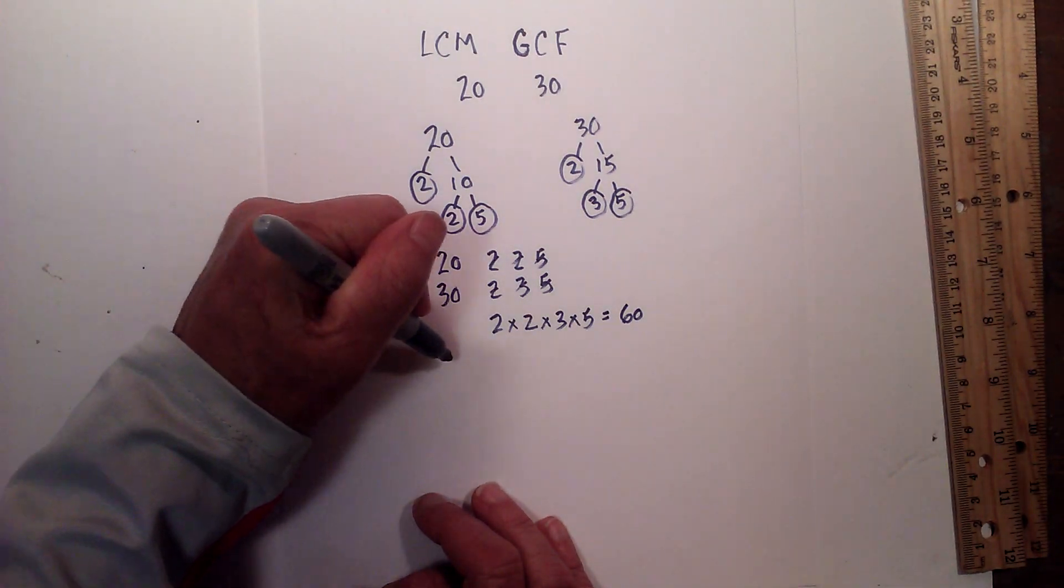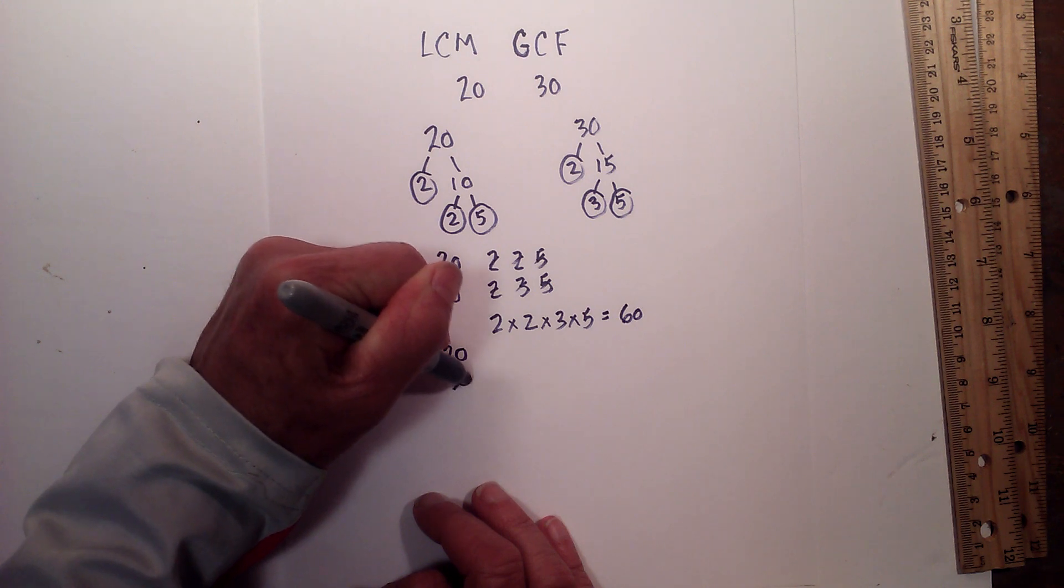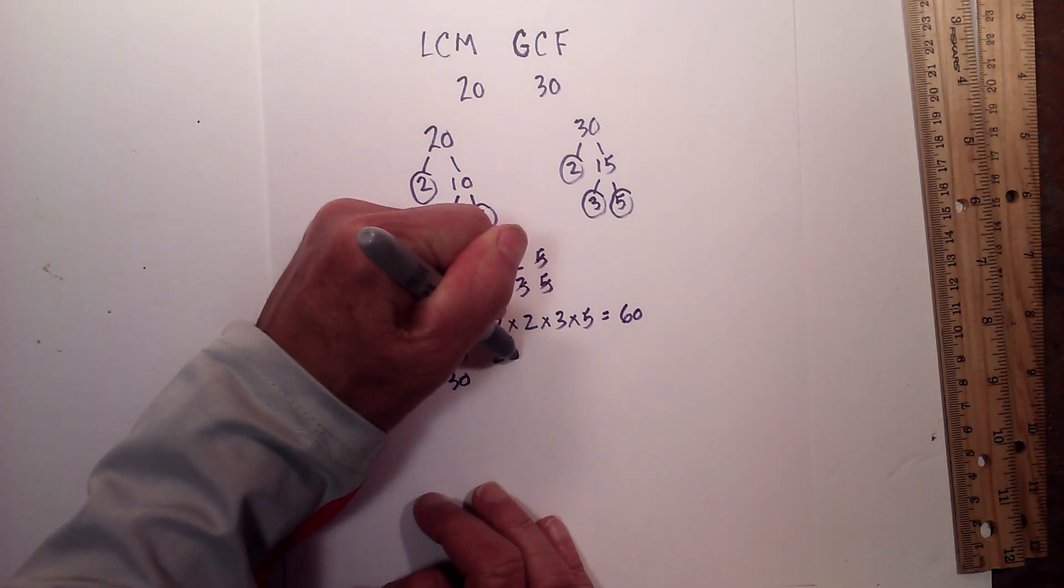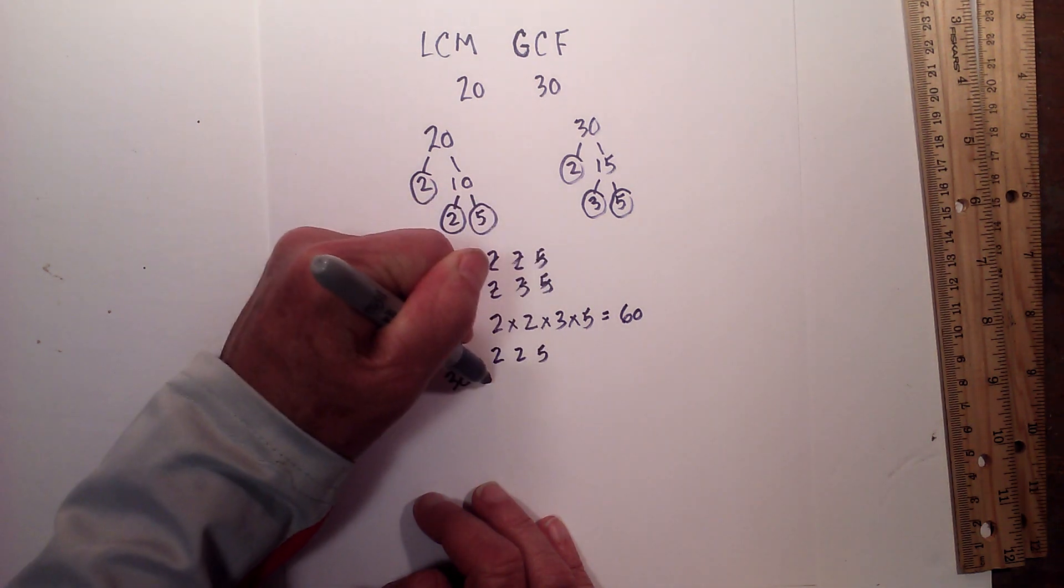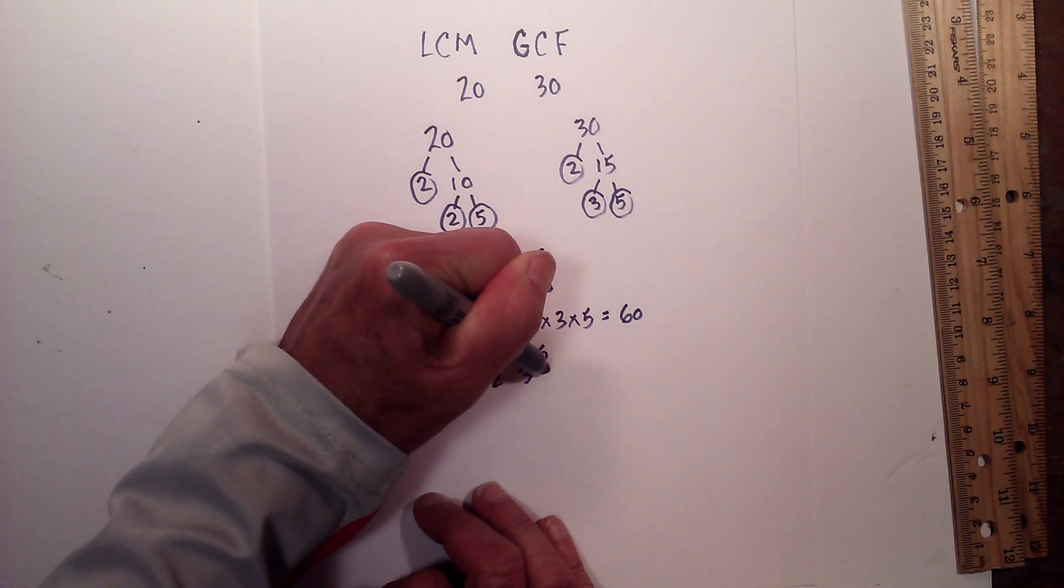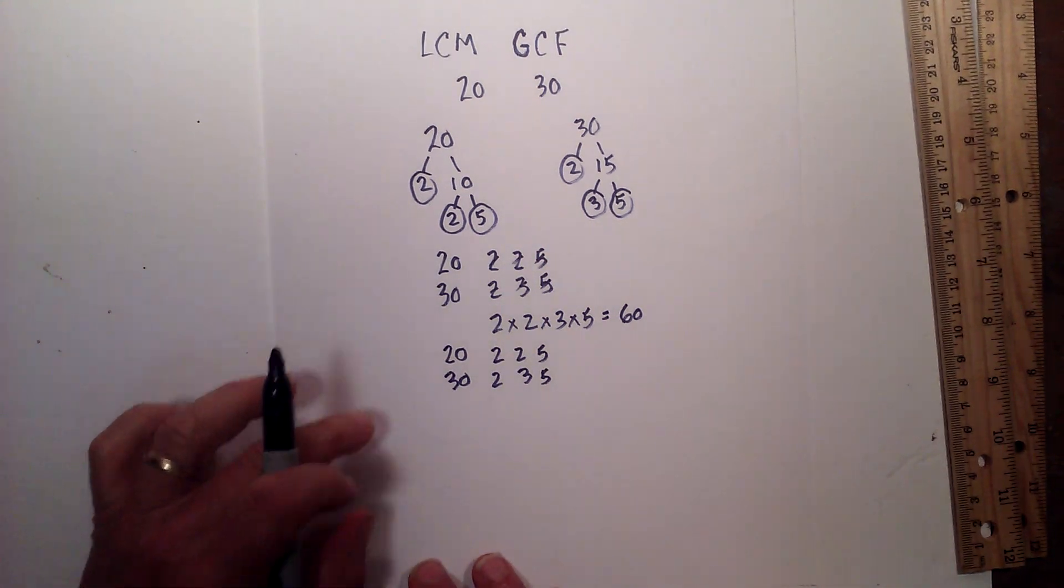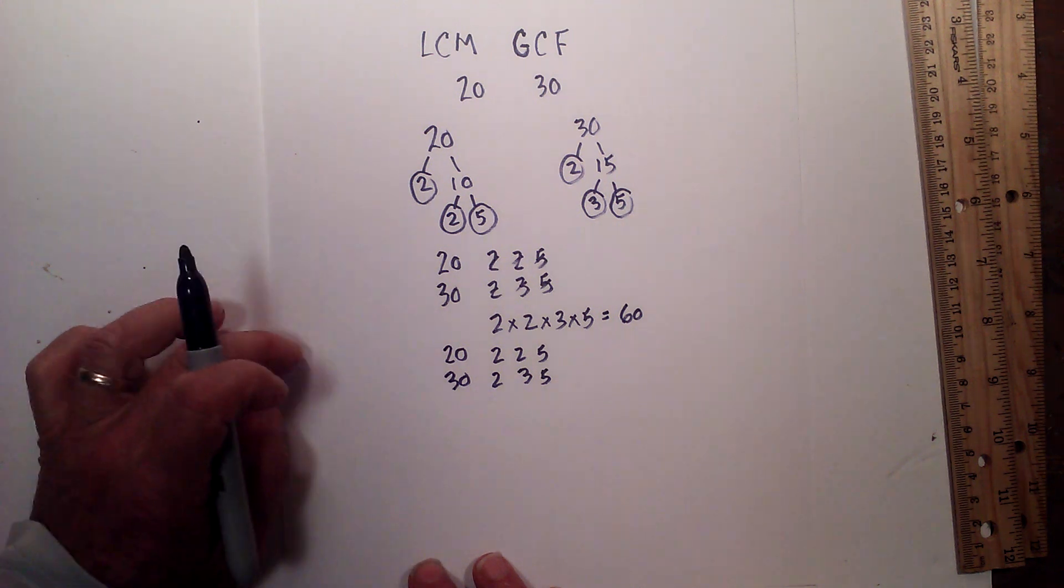So now let's find the GCF. I'm going to rewrite 20 and 30 in their prime numbers so it's not confusing. The greatest common factor is the largest number that will divide into both of these equally, and so you must find a prime number that is in both of these numbers.